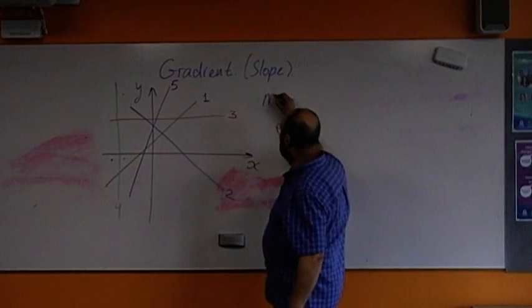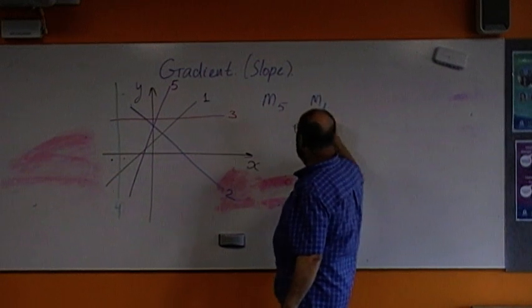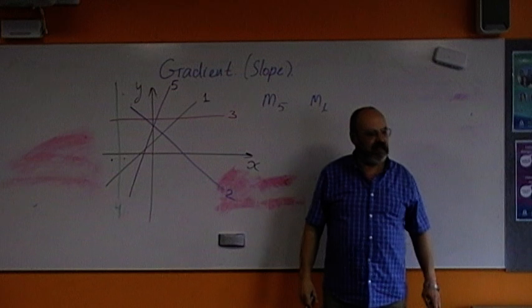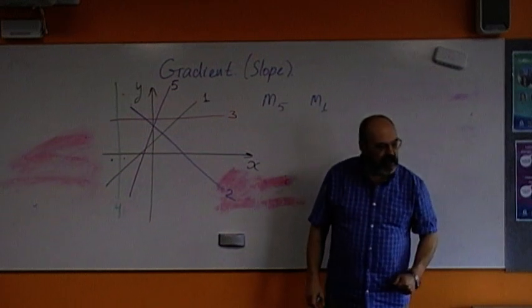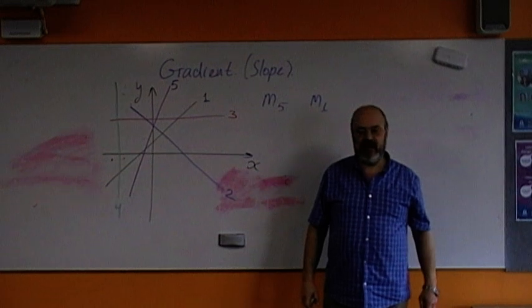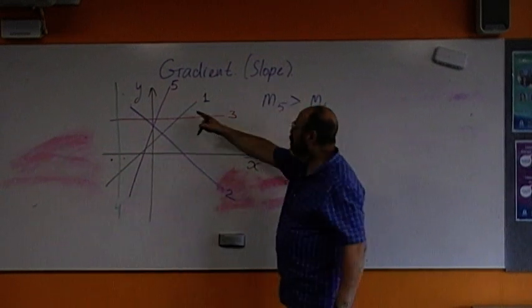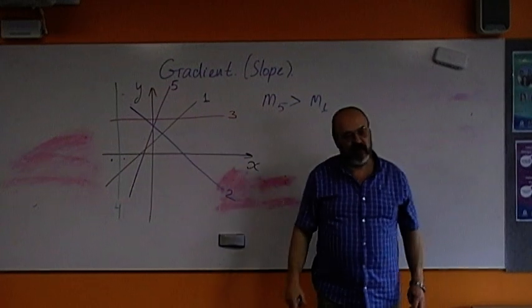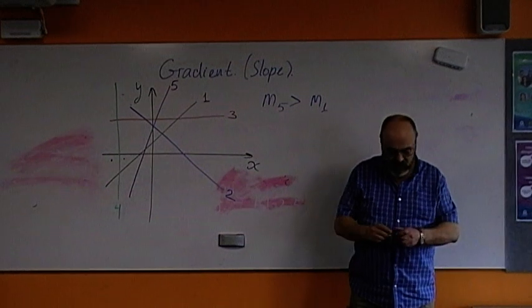Which gradient will be greater, M5 or M1? Which line will have a bigger gradient? M5. The steeper the line is, the more is the gradient. So, gradient of the line five greater than the gradient of the line one. Make sense? The steeper the line, the bigger the gradient.